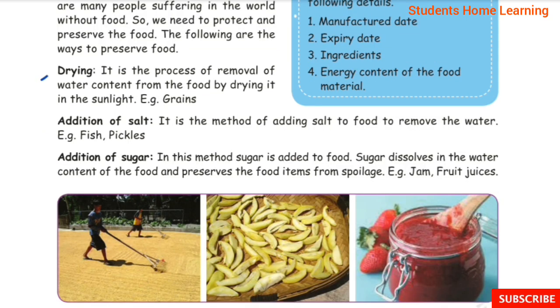Drying: It is the process of removal of water content from the food by drying it in the sunlight. Example: grains.